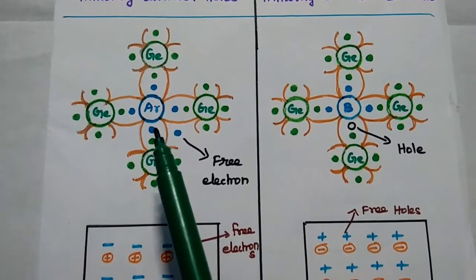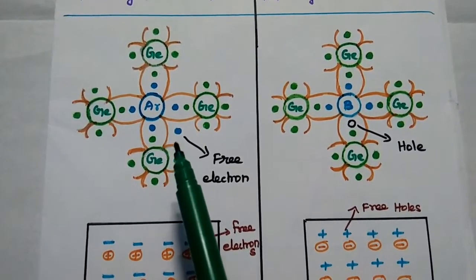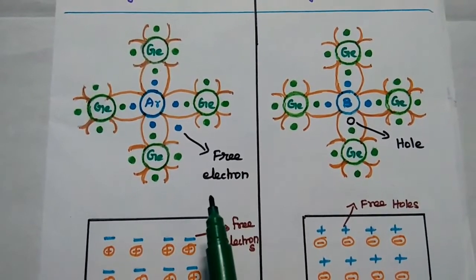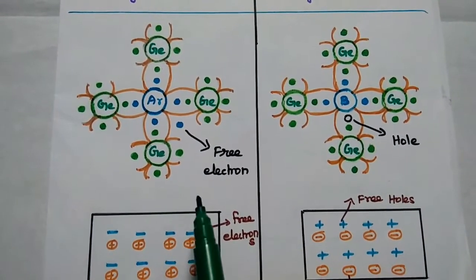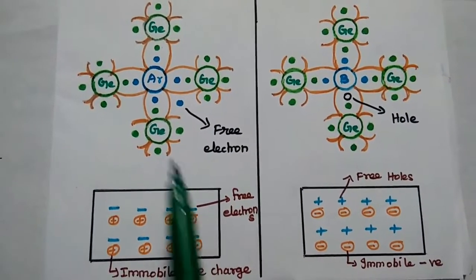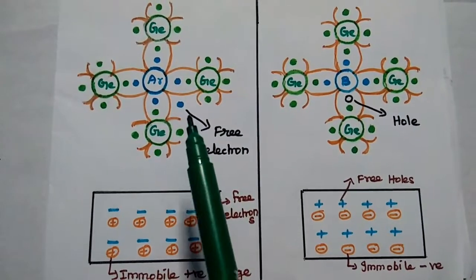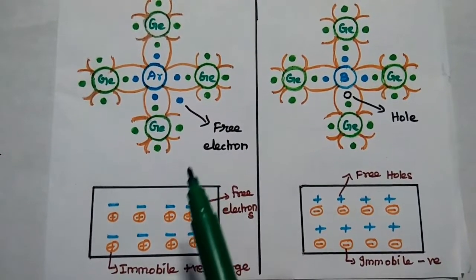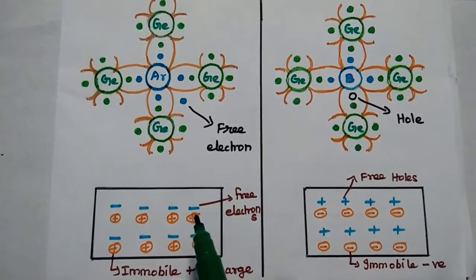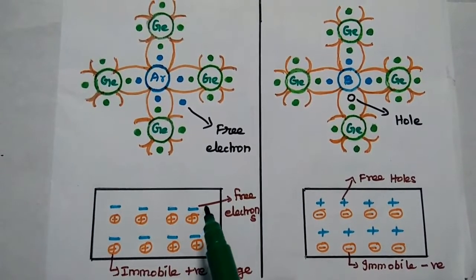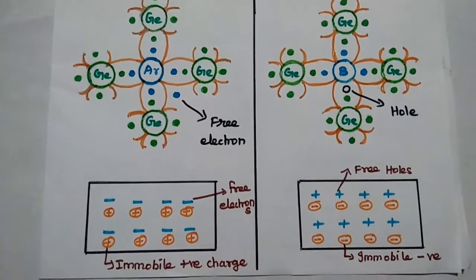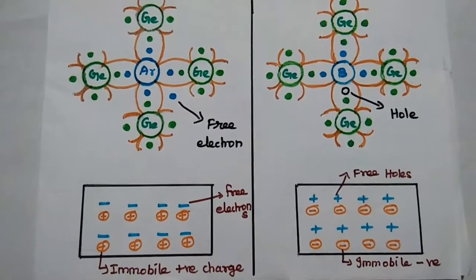We can add more number of arsenic atoms to increase the number of free electrons, thereby increasing the conductivity. In N-type, the majority carriers are electrons and minority carriers are holes. Whenever the arsenic atom donates one free electron, it becomes a positive charge — this is an immobile one. Whenever that electron is moving for conduction, it creates one immobile positive charge in the arsenic atom.